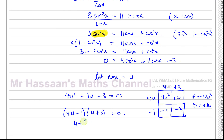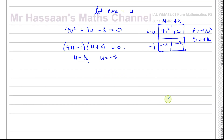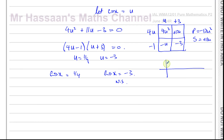So u equals one quarter and u equals negative three. That means cosine x equals one quarter and cosine x equals negative three. If we try to solve cosine x equals negative three, there'll be no solution, because the cosine curve only goes between minus one and one — it can never reach minus three. If you try, you'll get a math error on your calculator.